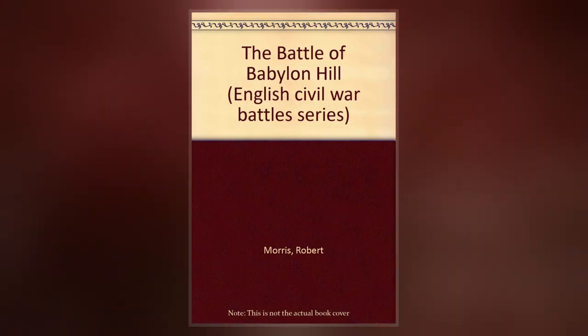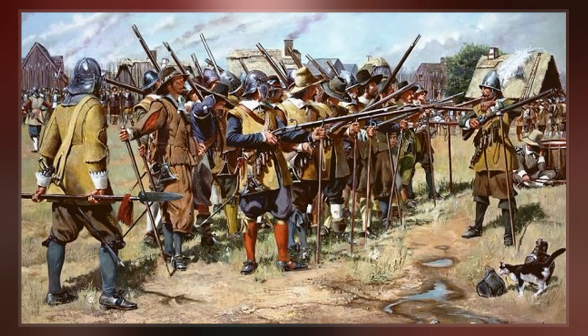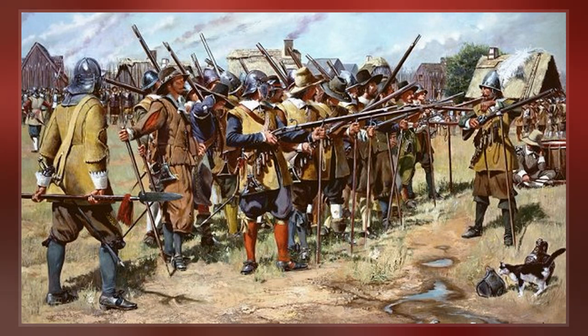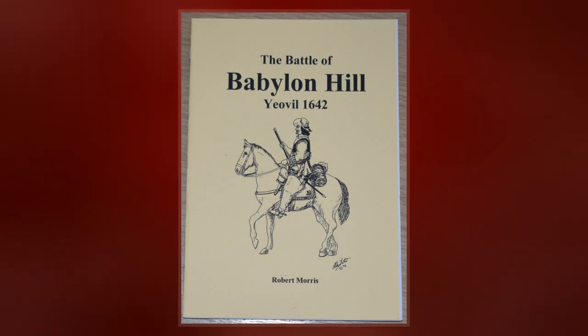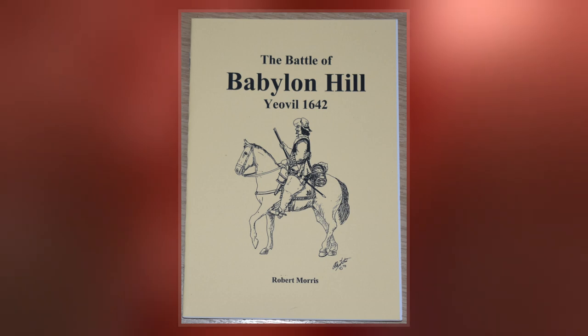The engagement occurred after a failed Parliamentarian siege of nearby Royalist-held Sherborne. After the Parliamentarians had retreated to Yeovil, a force of around 350 Royalists was sent to reconnoiter their movements.